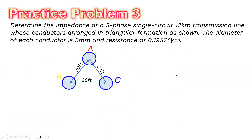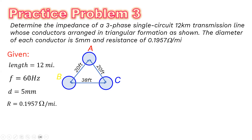Practice problem number three: determine the impedance of a three-phase single-circuit 12-kilometer transmission line whose conductors are arranged in a triangular formation as shown. The diameter of each conductor is 5 millimeters and the resistance is 0.1957 ohms per mile. Given: length = 12 km, frequency = 60 Hz, diameter = 5 mm, R = 0.1957 Ω/mile.